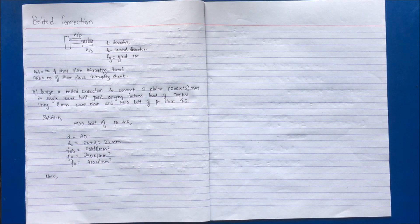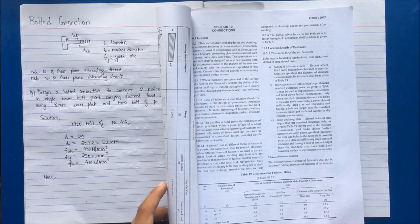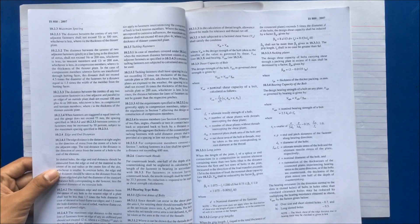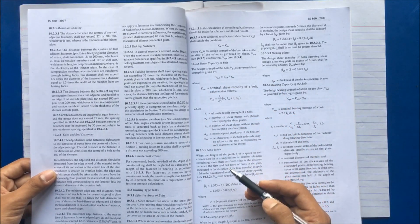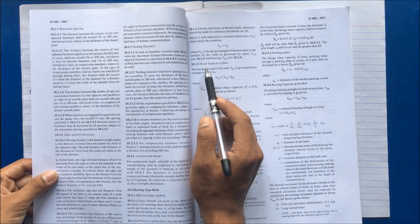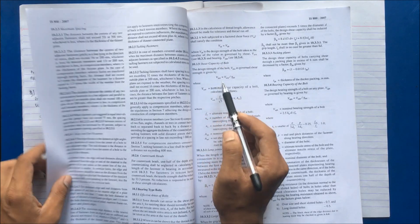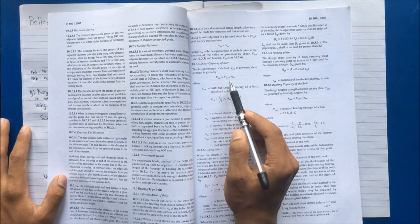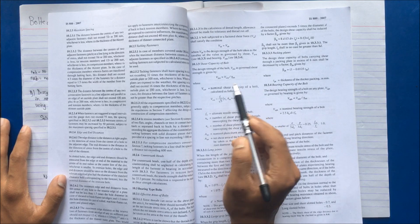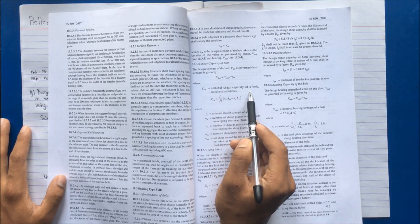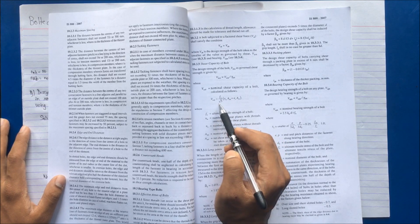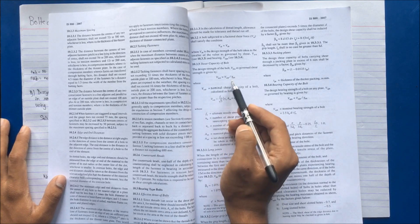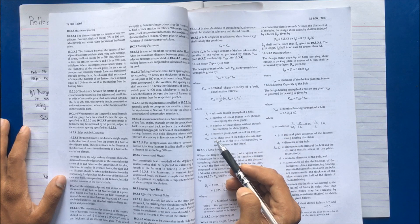Now, how to design a bolted connection: the very first step is to determine the shear strength of the bolt. You can refer to page 75 of the code. The first thing is to determine the shear capacity of the bolt, Vdsb, which equals Vnsb divided by γmb. Vnsb is the nominal shear capacity of the bolt, calculated by substituting values into the formula and dividing by γmb, the partial safety factor.